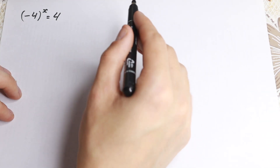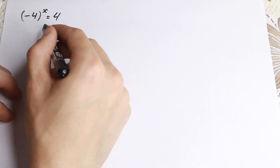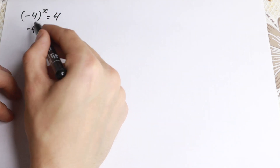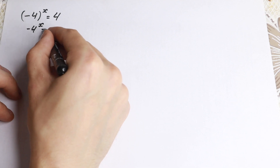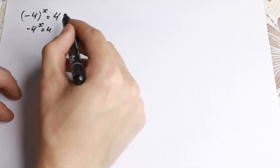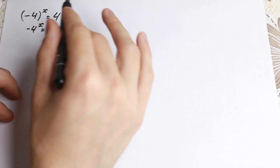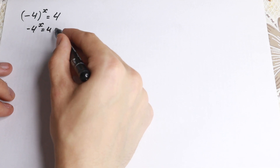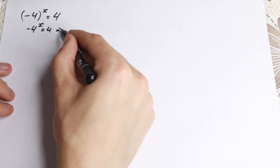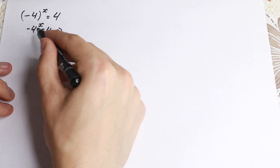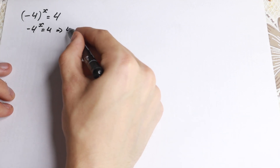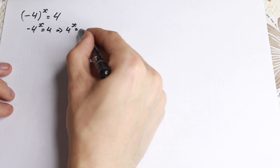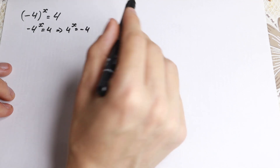First, if we don't have any parentheses right here — so if we don't have these parentheses — we will have minus 4 to the power x equal to 4. So if we reject these parentheses and multiply both sides by minus one, we will have that 4 to the x equal to minus 4.